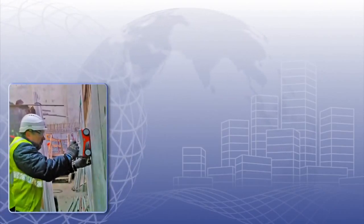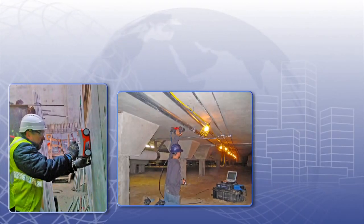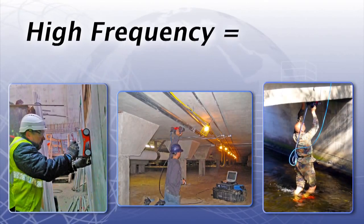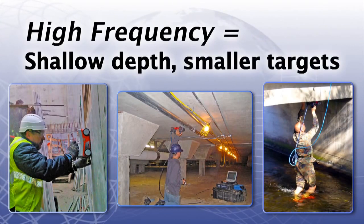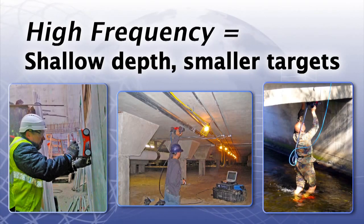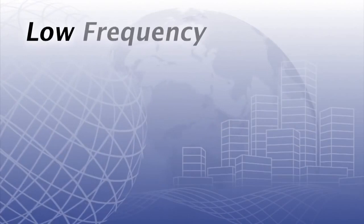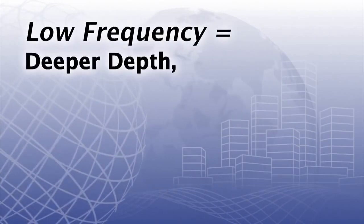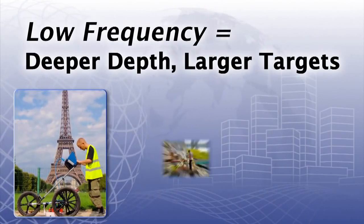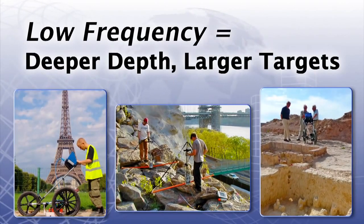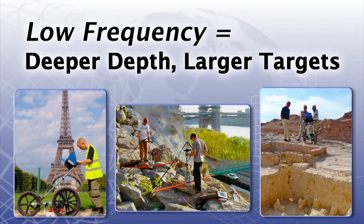Antennas come in various frequencies, depending upon your application. High frequencies are for shallow depth and small targets, ideal for concrete applications. Low frequencies are for typically deeper depth and larger targets, such as utility, geological, and archaeological applications.